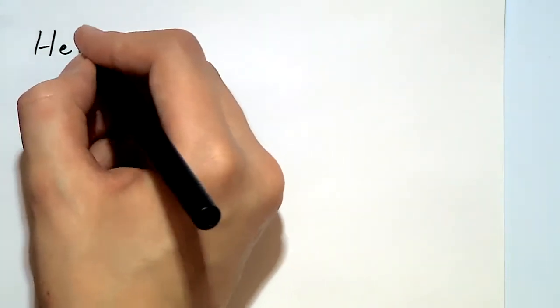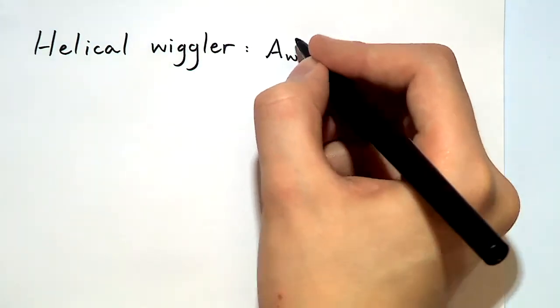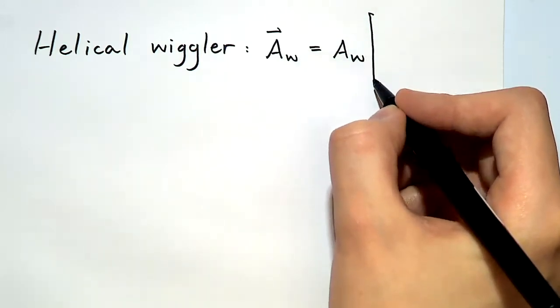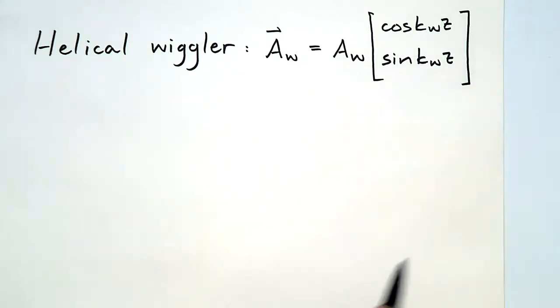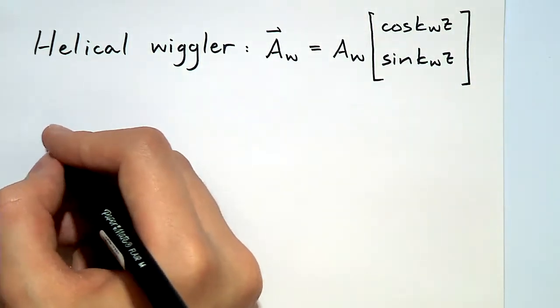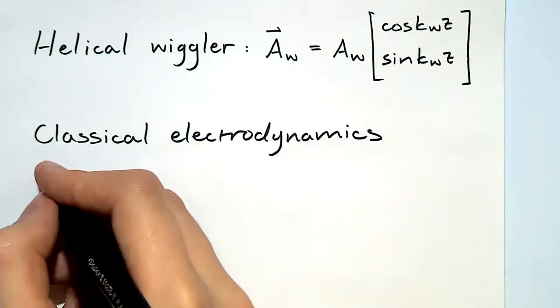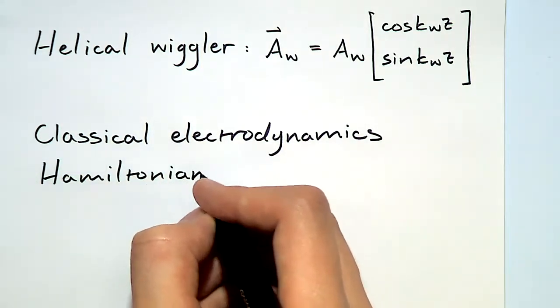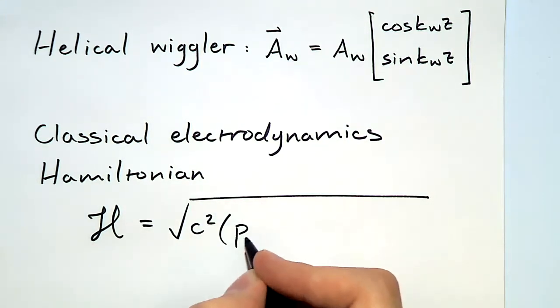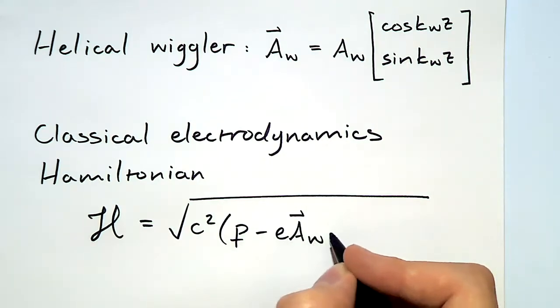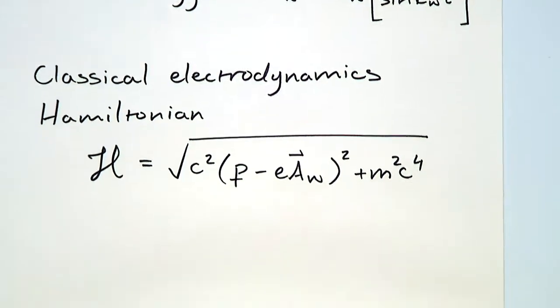Considering first the helical wiggler, where the magnetic vector potential is just rotating around in the xy plane as we go along z, so it's just drawing out a helix. We want to understand how this helical wiggler affects the motion of the electrons. From classical electrodynamics, we know that the Hamiltonian of an electron in an electromagnetic field is just the relativistic expression for energy, where now the kinematic momentum is written in terms of the canonical momentum minus a factor due to the presence of the electromagnetic field.